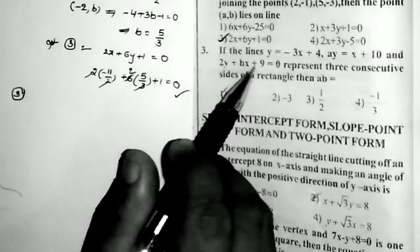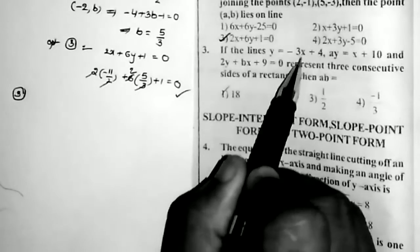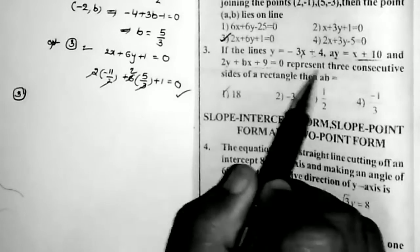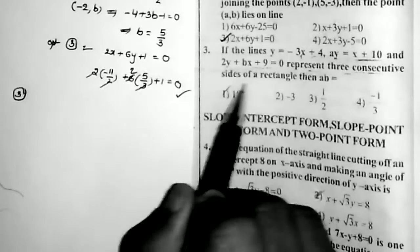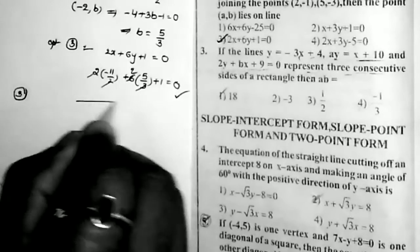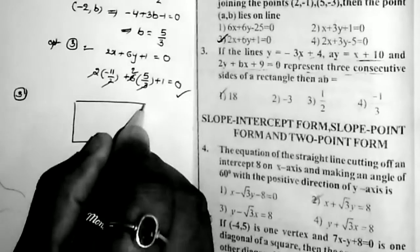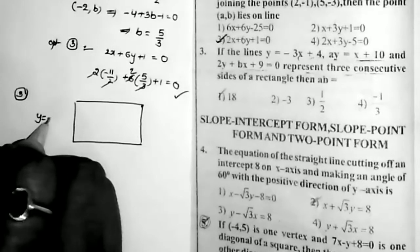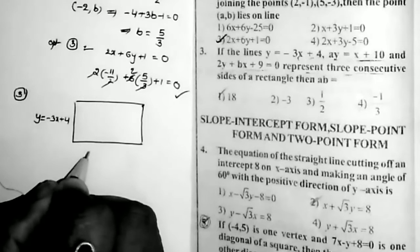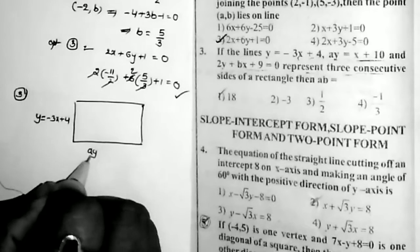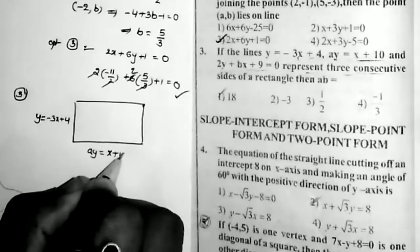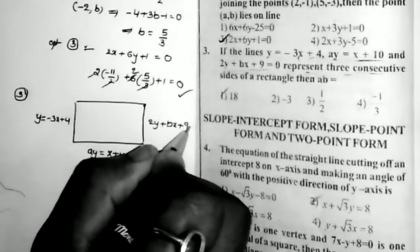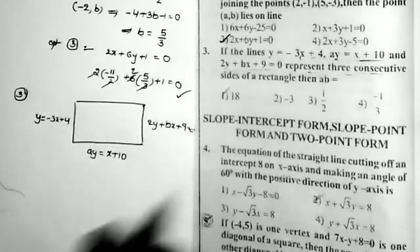Sum number 3: if the lines y = −3x + 4, ay = x + 10, and 2y + bx + 9 = 0 represent three consecutive sides of a rectangle, what is the value of a × b? In a rectangle, opposite sides are parallel and adjacent sides are perpendicular. The first equation is y = −3x + 4, second is ay = x + 10, and third is 2y + bx + 9 = 0.